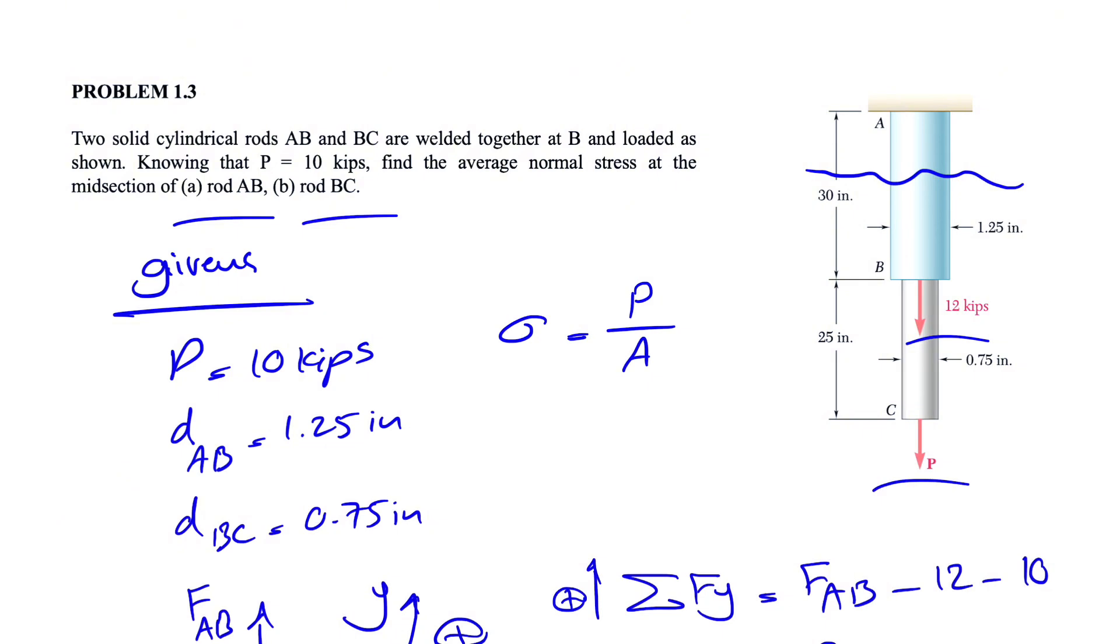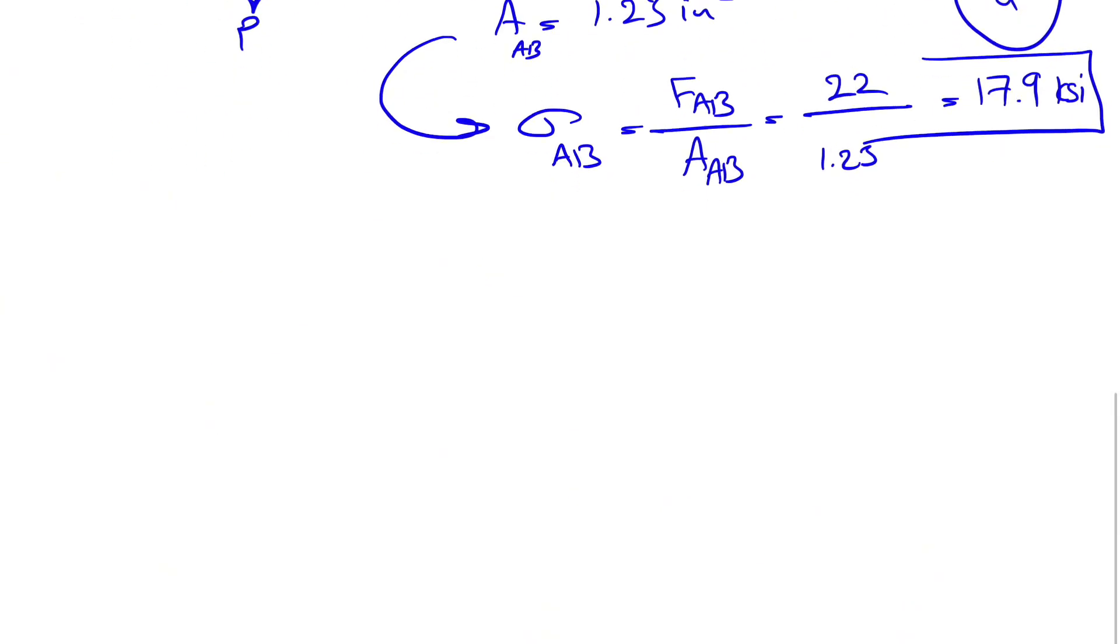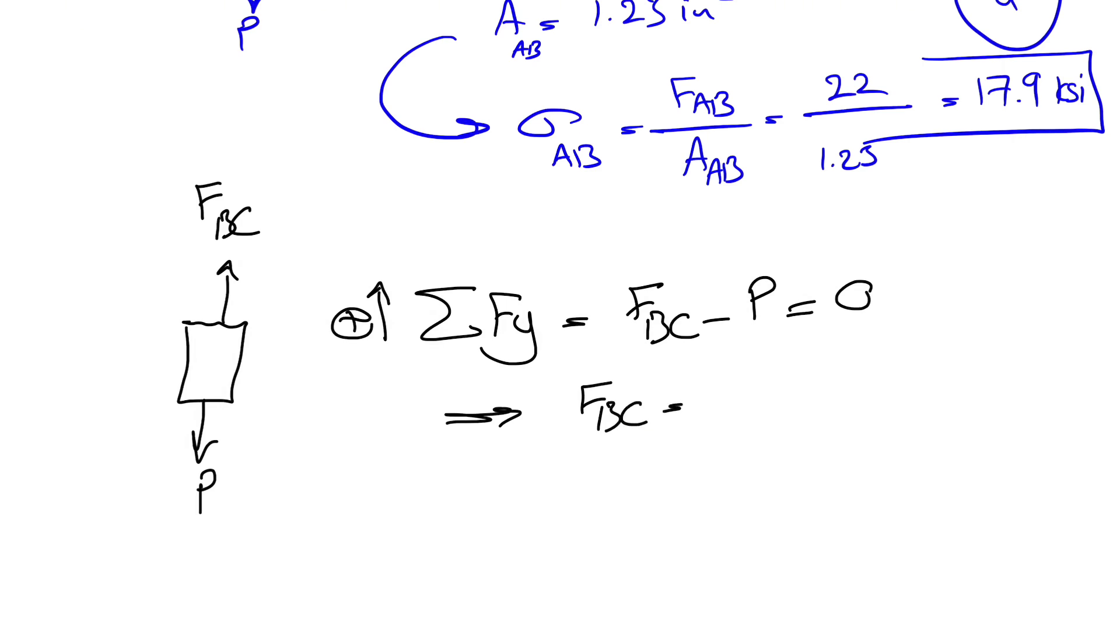So for rod BC, let's consider our section here and if you want to draw the free body diagram, we have the force P that is applying in here and let's call our force F this time BC and if we do the sum of all forces in Y direction, again this is positive, F_BC minus P is equal to zero and that means our F_BC is equal to P which is 10 Kips from the question.